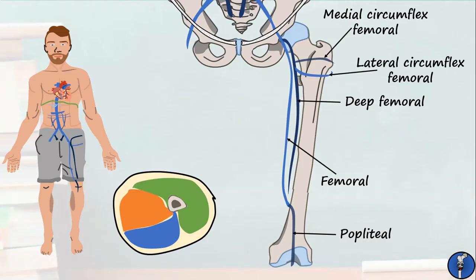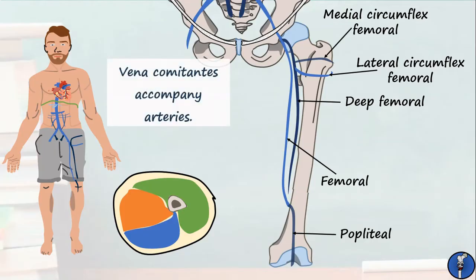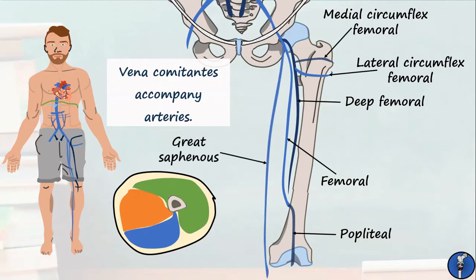What we've discussed so far are called venae comitantes, which are veins that accompany arteries. In addition to these, the body also has a number of more superficial veins that are independent to the arteries. In the thigh, these are the great saphenous, which drains into the femoral vein, and the femoral cutaneous, which drains into the upper part of the great saphenous.